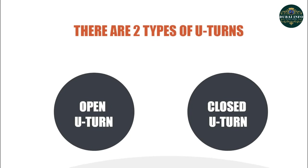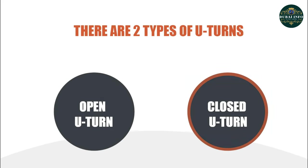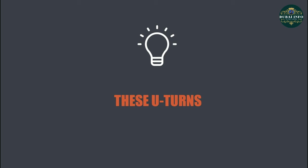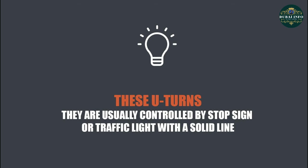In general, there are two types of U-turns: open U-turn and closed U-turn. These U-turns are commonly found on dual carriageway roads somewhere in between the stretch of road. They are usually controlled by a stop sign or traffic light with a solid line.